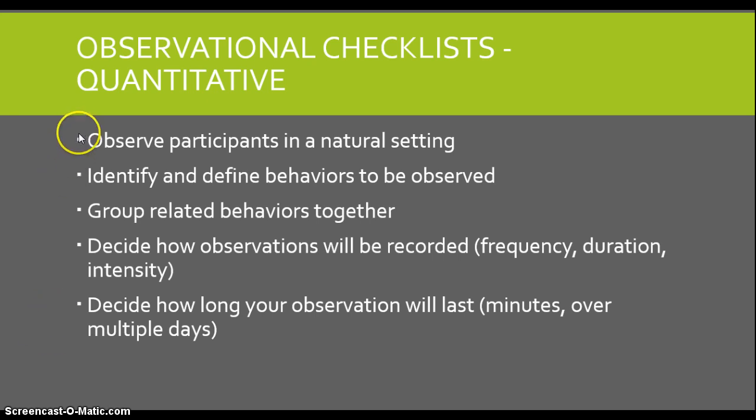With an observational checklist you're going to be observing participants in a natural setting. In order to create the observational checklist, you first have to decide what behaviors you're going to potentially observe. These behaviors are going to be behaviors that you probably read about in your articles — you're not just going to come up with anything. You're going to use the research that you did for your literature review to inform the decisions you make about your research instruments. This really goes for any research instrument.